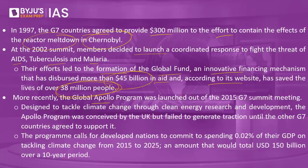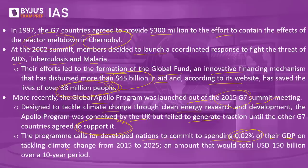More recently, the Global Apollo program was launched out of the 2015 G7 summit. Designed to tackle climate change through Clean Energy Research and Development, the Apollo program was conceived by the UK but failed to gain traction until the other G7 countries agreed to support it. The program calls for developed nations to commit to spending about 0.02% of their GDP on tackling climate change from 2015 to 2025, an amount totaling USD $150 billion over a 10-year period.